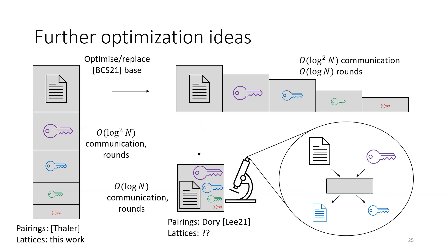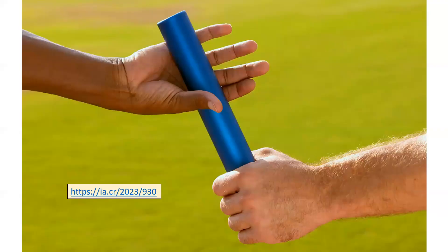Looking at what's going on inside this protocol, it repeatedly reduces large messages and large keys simultaneously to smaller ones. I think it would be really cool to use prior work like the concretely efficient Labrador protocol to go through these optimizations and aim for some really concretely efficient arguments. My last task of the talk is to delegate this to you and see if you can do better — so thank you very much.